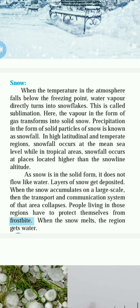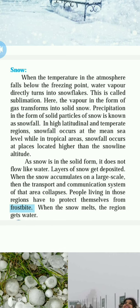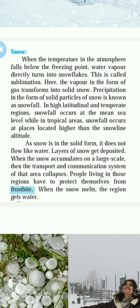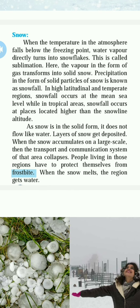Precipitation in the form of solid particles of snow is known as snowfall. In high latitude and temperature regions, snowfall occurs at the main sea level, while in tropical areas, snowfall occurs at places located higher than the snow line. In Mumbai or our area, we experience a normal atmosphere and cannot experience much cold. But when you go to places like Khandala, Lonavala, Pune, or Matheran, you can feel a very pleasant or cool climate because they are at higher altitudes.